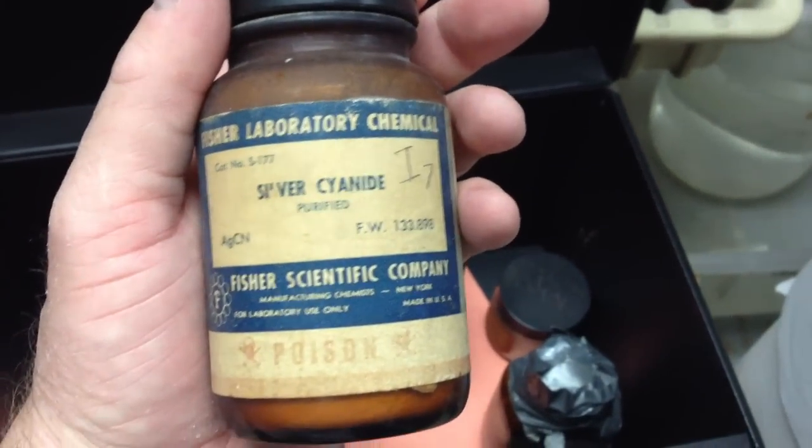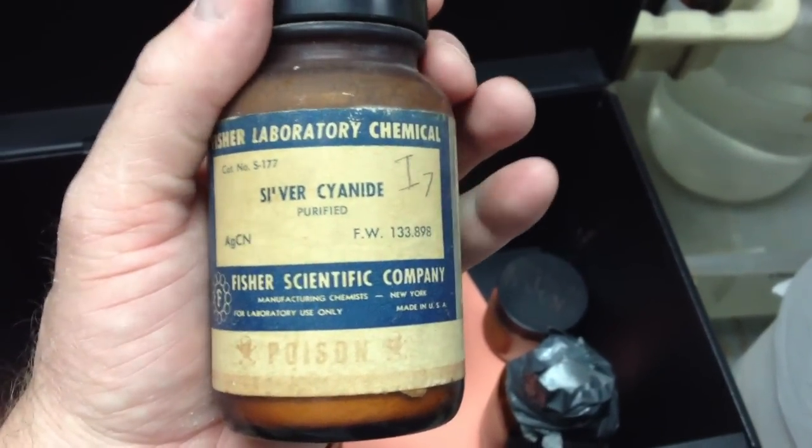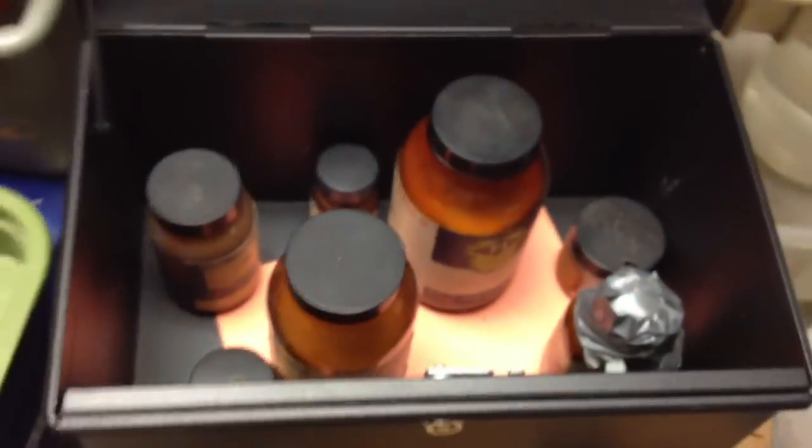Here's some classier stuff. Silver cyanide. There we go. Purified. Again, that's poison. Again, it's a solid substance. All right, let's lock this up and hide it again.